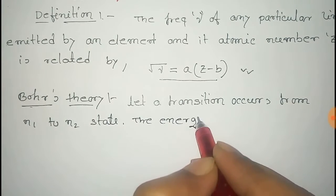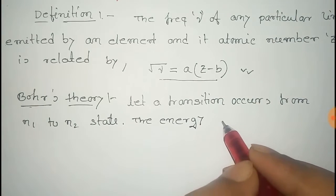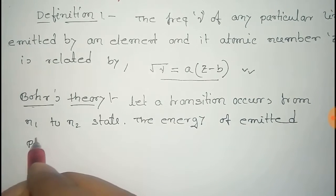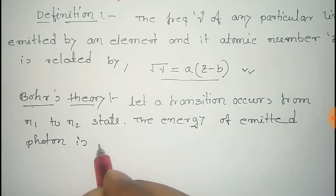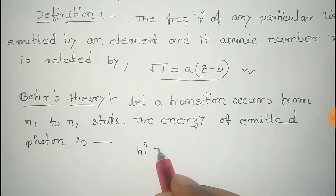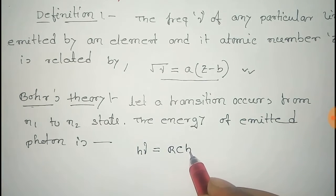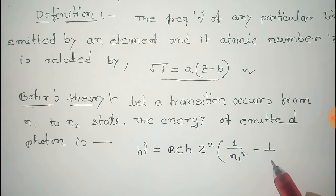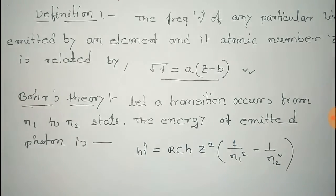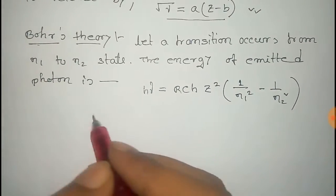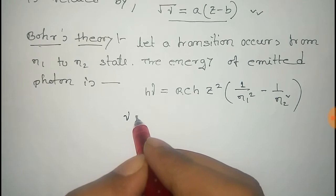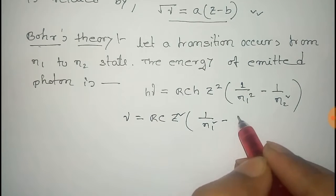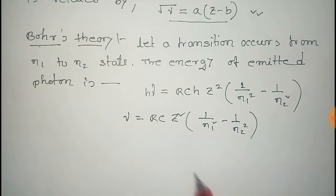The energy of the emitted photon due to this transition is given by: hν = RchZ² × (1/n1² − 1/n2²). From this, the frequency of the emitted photon is: ν = RcZ² × (1/n1² − 1/n2²).